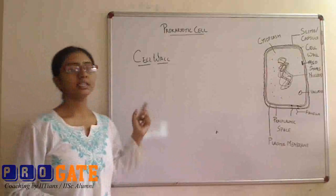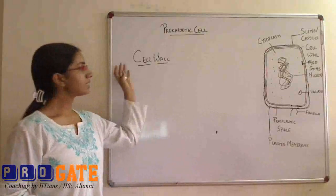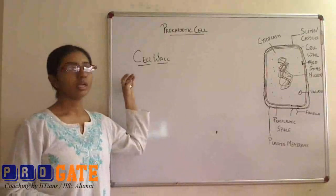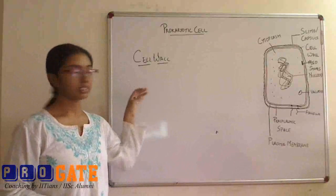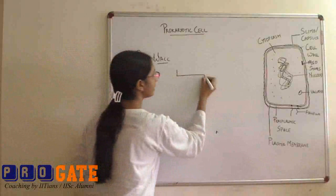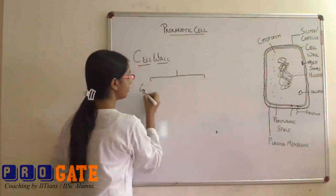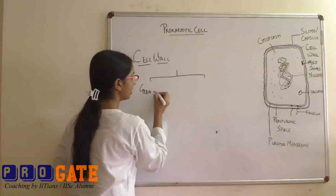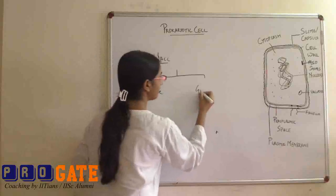So earlier we have studied about staining of bacterial cells. Cell wall plays a major crucial role in actual staining of the bacterial cell. So as we studied earlier, there are two types of bacteria based on the cell wall: gram-positive bacteria and gram-negative bacteria.